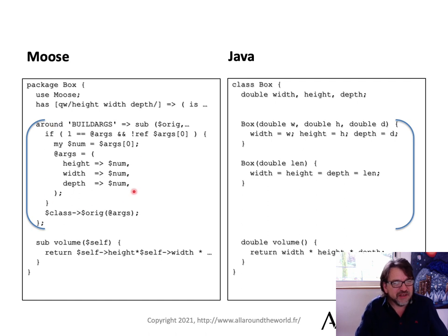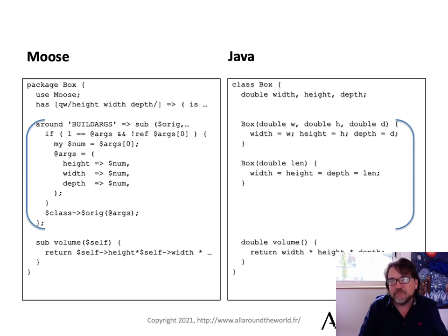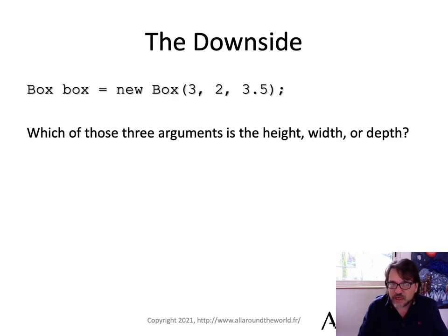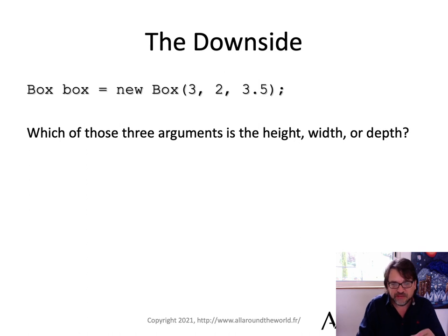How does Java handle this? Java can have overloaded constructors. So you've got one taking double height, double width, double depth, and another taking just double length. It's pretty simple — you can call new Box with three arguments or new Box with one argument and it does the right thing. So Java actually makes Moose look bad, which is embarrassing. The downside is that because Java doesn't use named arguments, you can't tell which of those are the height, width, or depth. To me, that is a design flaw in Java.